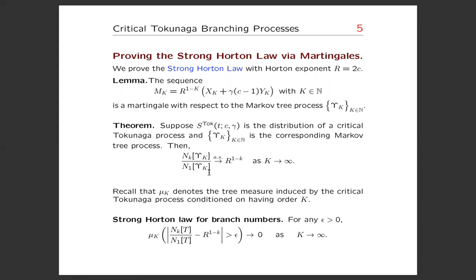And then if we go back to the original critical Tokunaga process, then it implies the strong Horton law for branch numbers. That is, the convergence in probability for the number of order k branches in tree T.